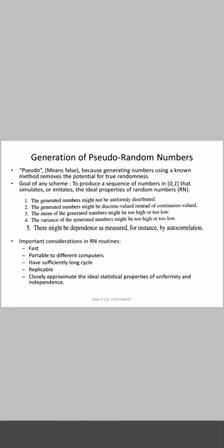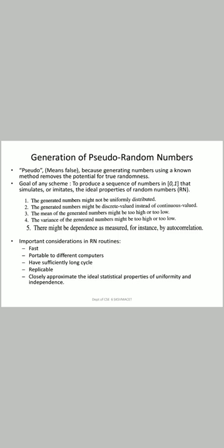There are five important considerations for random number routines: it should be fast, portable to different computers, have a sufficiently long cycle, be replicable, and closely approximate the ideal statistical properties of uniformity and independence.